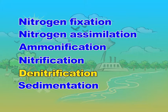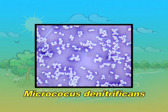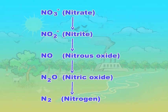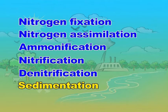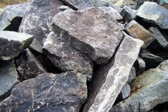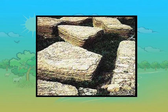Denitrification. In this step, denitrifying bacteria like Pseudomonas, Micrococcus denitrificans, Thiobacillus denitrificans, etc. convert ammonia, nitrites and nitrates into molecular nitrogen. The reaction can be summarized as: nitrate → nitrite → nitrous oxide → nitric oxide → nitrogen. Sedimentation: nitrates present in soil sometimes get locked up in rocks. This is called the sedimentation of nitrogen. During weathering, nitrates are released by conversion into nitrogen.